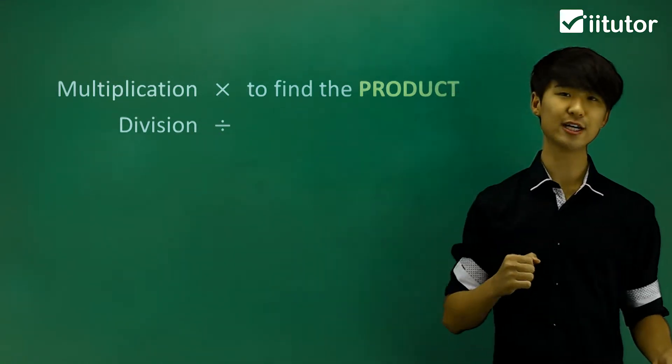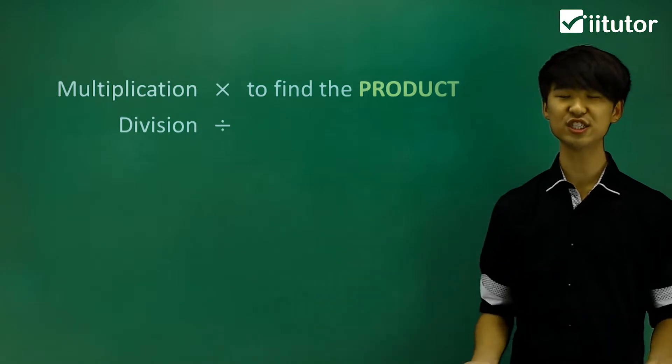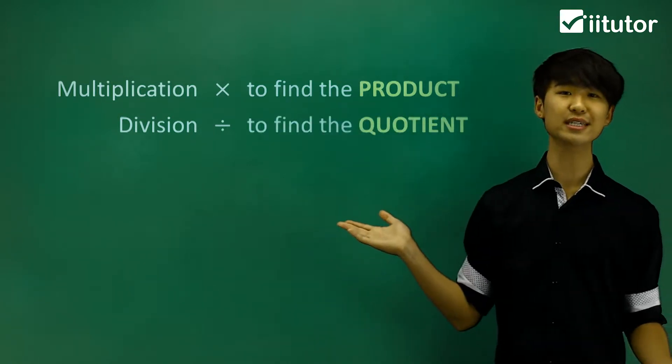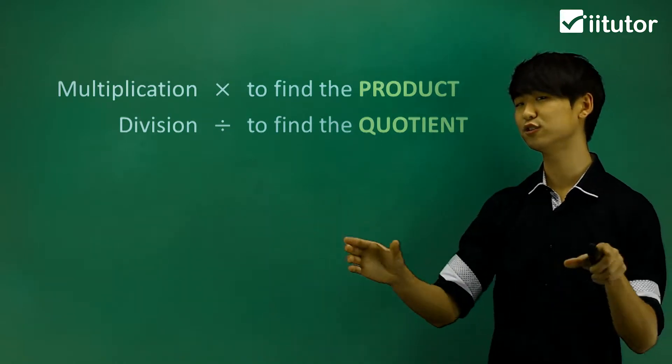Now division, which we know is that divide sign. Division we can use the term quotient. So finding the quotient is when we find the division of two numbers together.